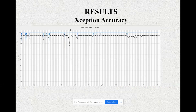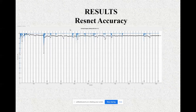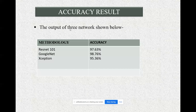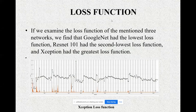Here are the results. Comparing accuracy across the three networks: ResNet-101 had the second highest accuracy at 97.63%, followed by GoogLeNet and Xception. Regarding the loss function, GoogLeNet had the lowest loss function, ResNet-101 had the second lowest, and Xception had the greatest loss function. These are the graphs obtained during the training and testing process.